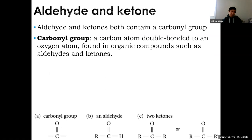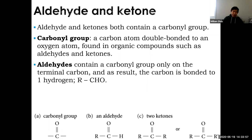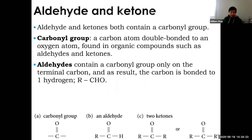An aldehyde has a hydrogen and a carbon chain attached to the carbon with the double bond, whereas a ketone does not have a hydrogen — it has two carbon chains. An aldehyde has the carbonyl group on the terminal carbon. The chemical symbol is CHO, which means carbon double bond oxygen, carbon single bond hydrogen — not carbon bonded to hydrogen bonded to oxygen. If you write COH, you'd have an alcohol. CHO stands for aldehyde.